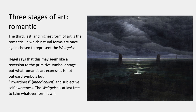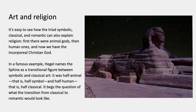The third and last stage in Hegel's philosophy of history is the Romantic stage. That's when natural forms are once again chosen to represent the spirit of the world — but in this case, natural forms means the kind of form that Hegel himself was used to in his own generation, early 19th century Romantic art. Hegel says this may seem like a reversion to the primitive symbolic stage, but what Romantic art expresses is not outward symbols but inwardness. Innerlichkeit — inwardness and subjective self-awareness — is what's being expressed in a landscape like this. It's not about a stormy sky out in the world; it's about the storm in you. The Weltgeist is then supposedly at last free to take whatever form it needs to.